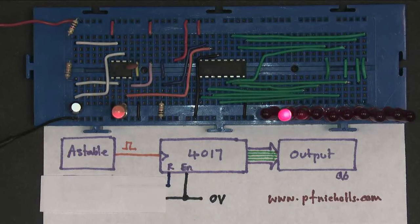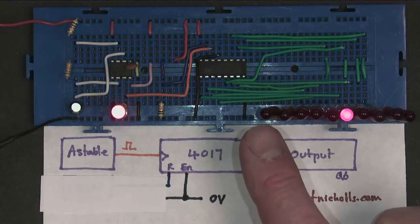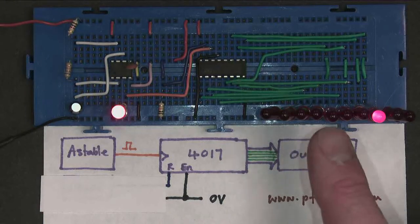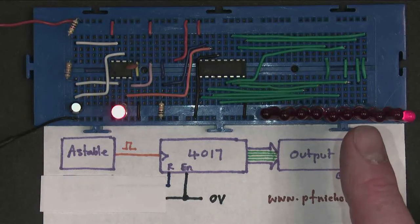I'm now going to remove the LED from output Q6. So it's 0, 1, 2, 3, 4, 5, 6. That one there.